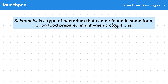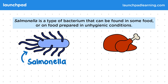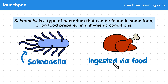Salmonella is a type of bacterium that can be found in some food or on food prepared in unhygienic conditions. You need to be able to state that salmonella can be spread by being ingested in or on food. There are two species of salmonella bacteria, but you don't need to remember this. Poultry, such as chicken, can be infected with these bacteria, and unhygienic food preparation can transfer this to other food, which can then be ingested — meaning taken into the body. Undercooking foods, such as chicken and eggs, is another way in which salmonella spreads.